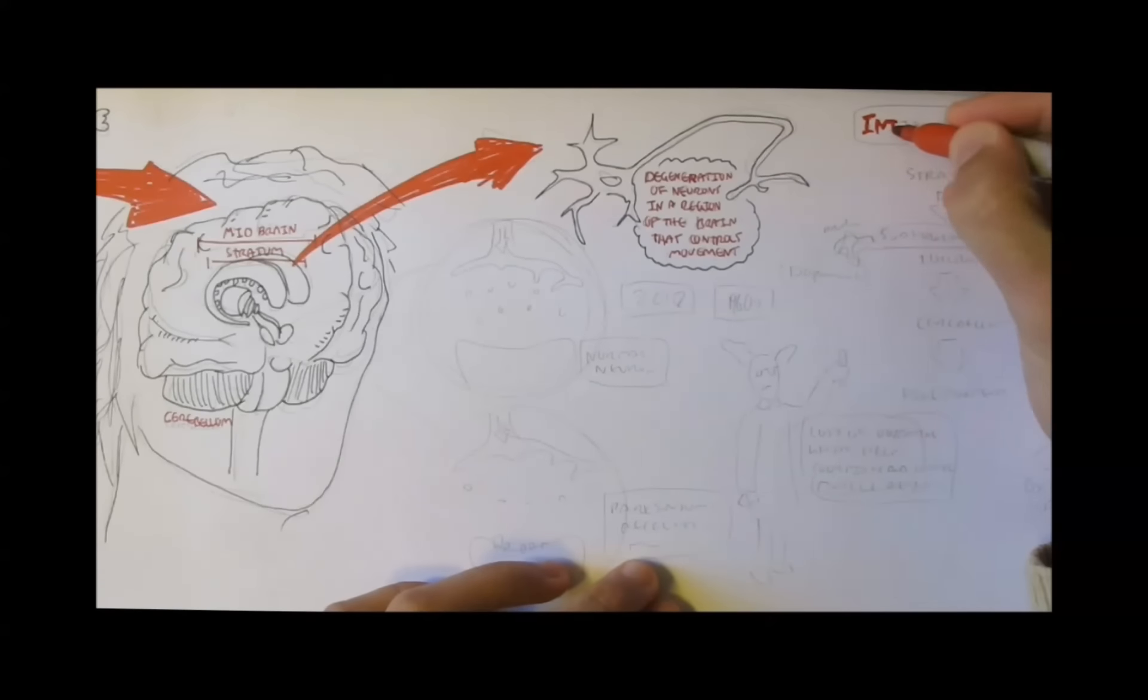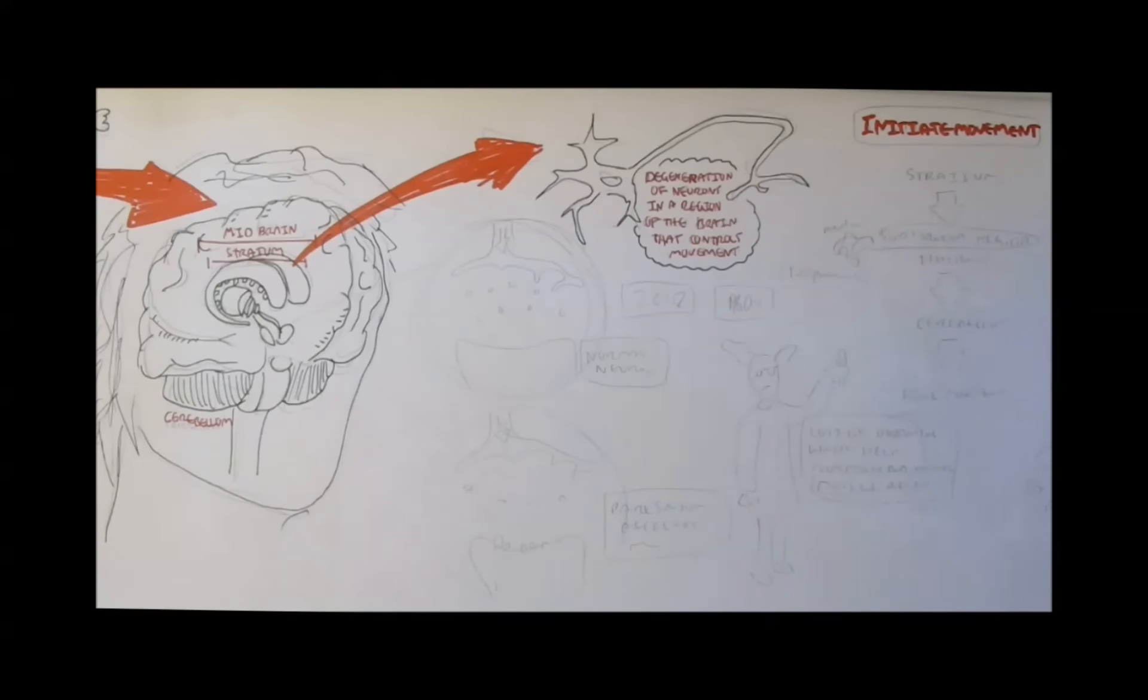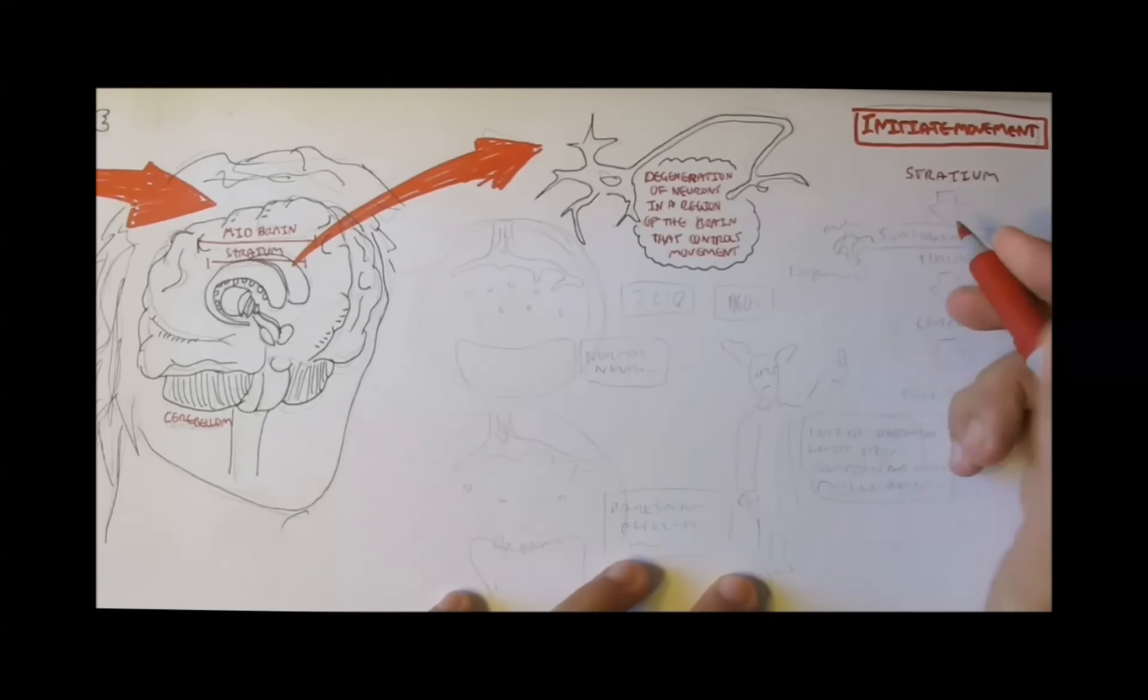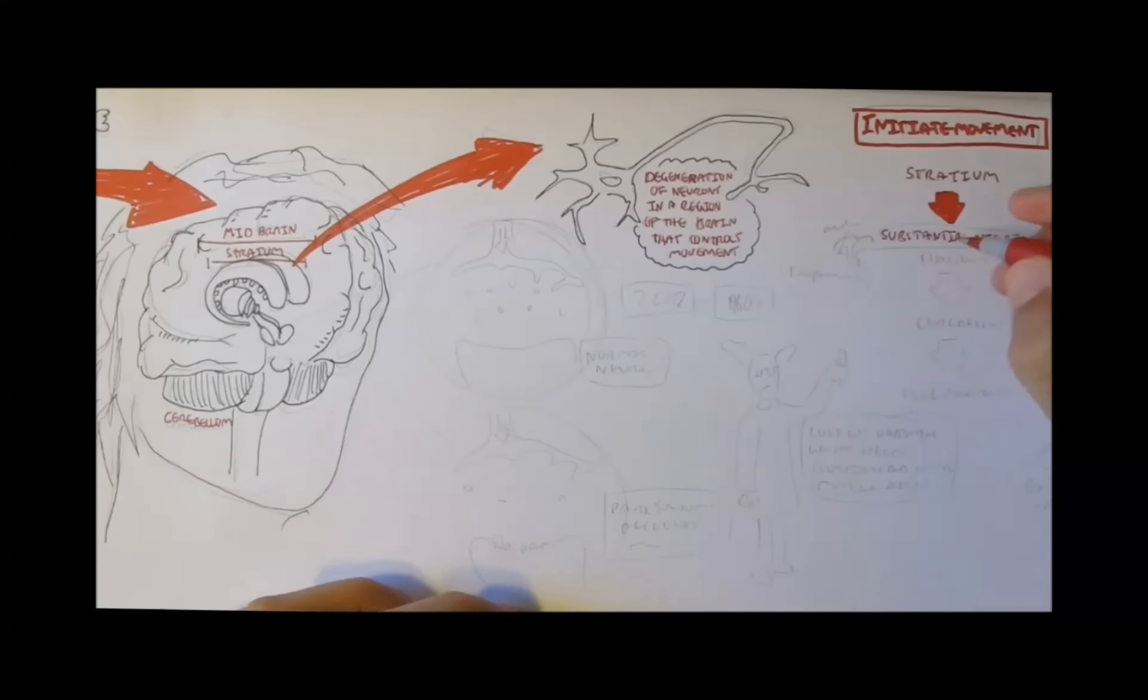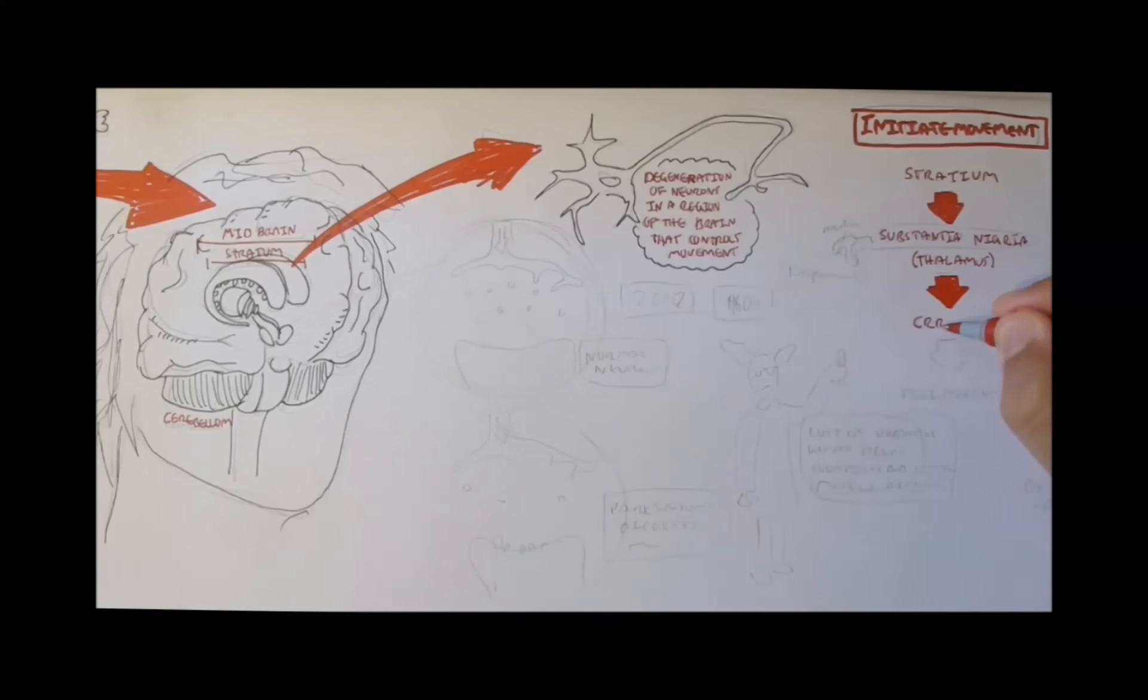When an individual initiates a movement, all planning and senses necessary to begin travels to the striatum. Then, the striatum interacts with other parts of the brain, such as the substantia nigra and thalamus, which will then send precise and balanced signals. These signals then travel to the cerebellum, which enables a coordinated balanced movement to be signaled further onto the peripheral nervous system and to specific muscles.